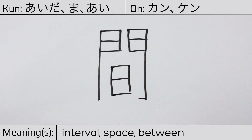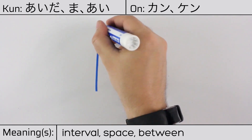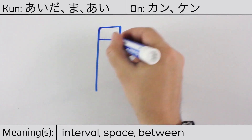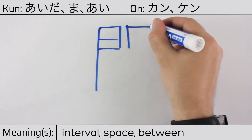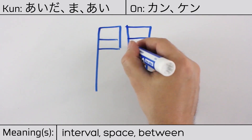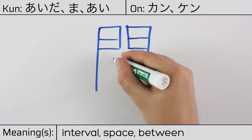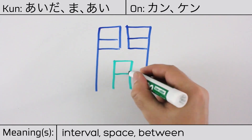This character is made up of the following radicals or parts: Gate, or door radical, mon, on the outside. And sun, or day, on the inside.